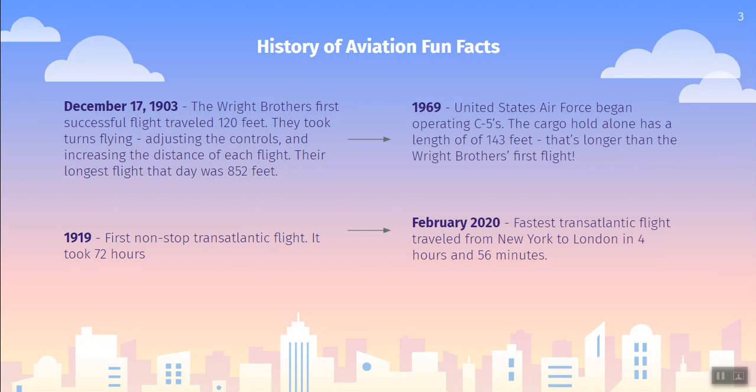In 1969, the United States Air Force began operating what are called C-5s — cargo planes that have a length of 143 feet. So the length of this one plane is longer than the entire Wright brothers' first flight. That's pretty cool. And similarly, about a hundred years later, we had the fastest transatlantic flight, which traveled from New York to London in just under five hours — a small fraction of the time. The reasons we were able to make such huge improvements in aviation is because our engineers studied things like the forces behind flight.